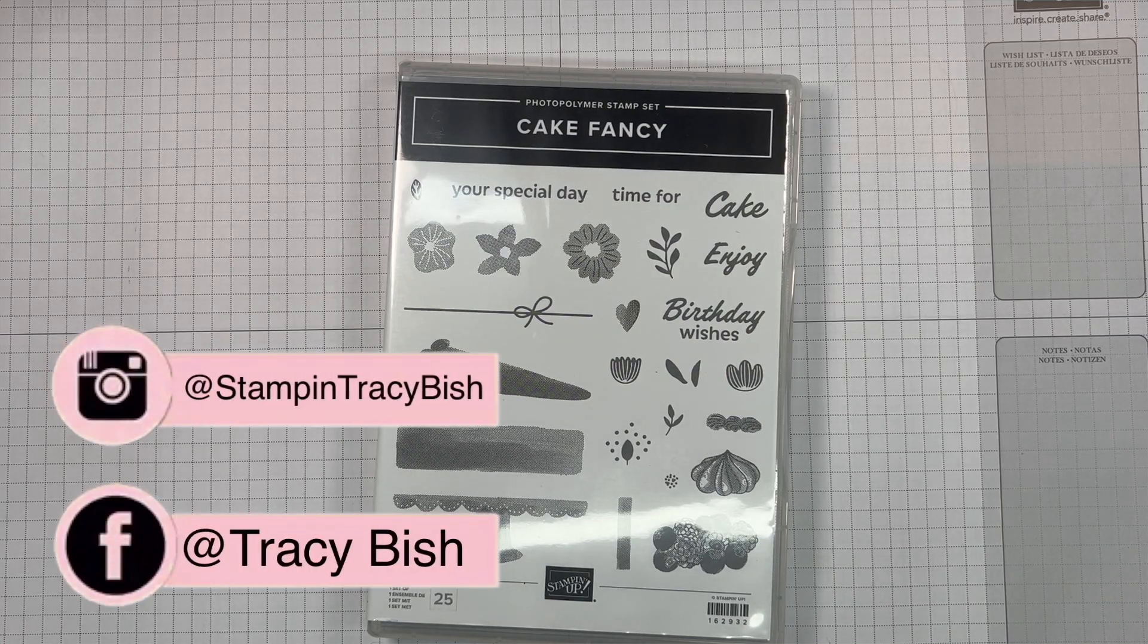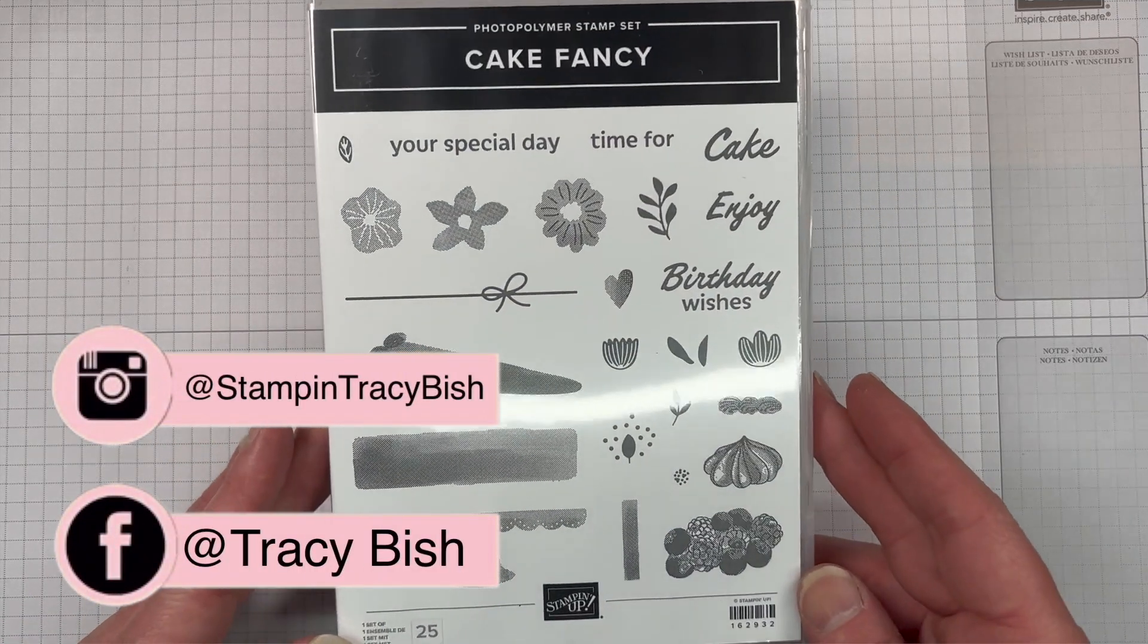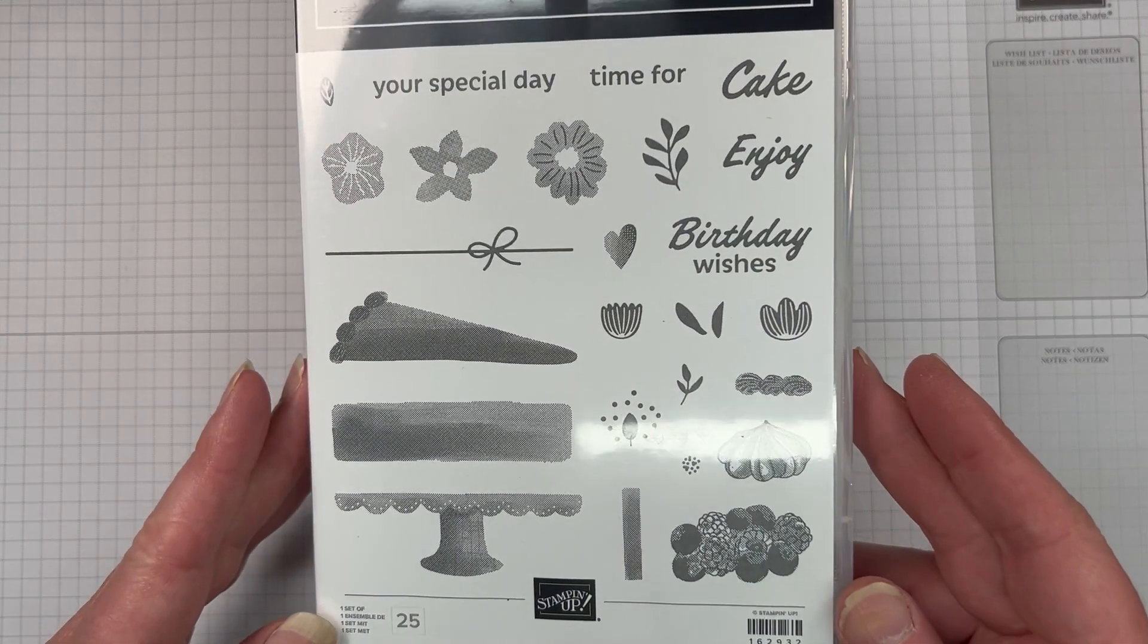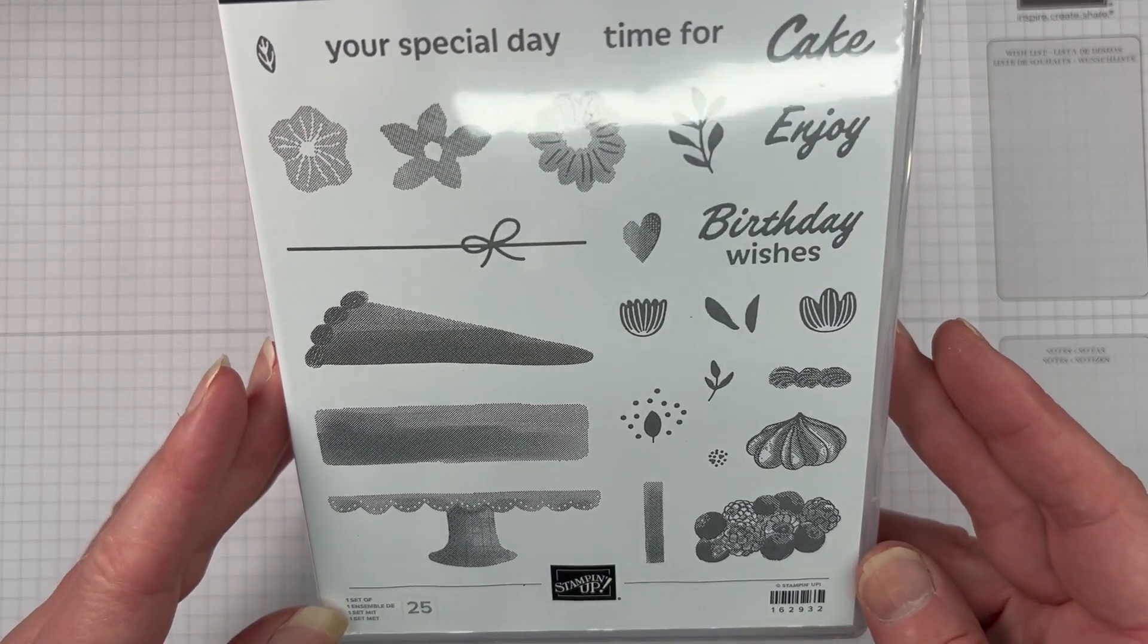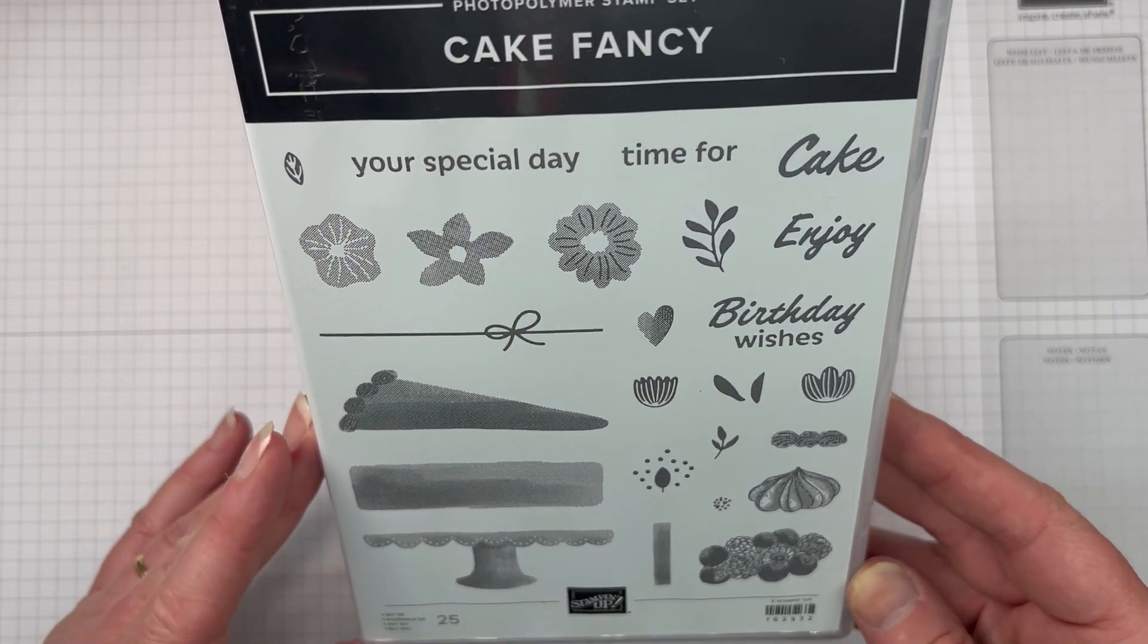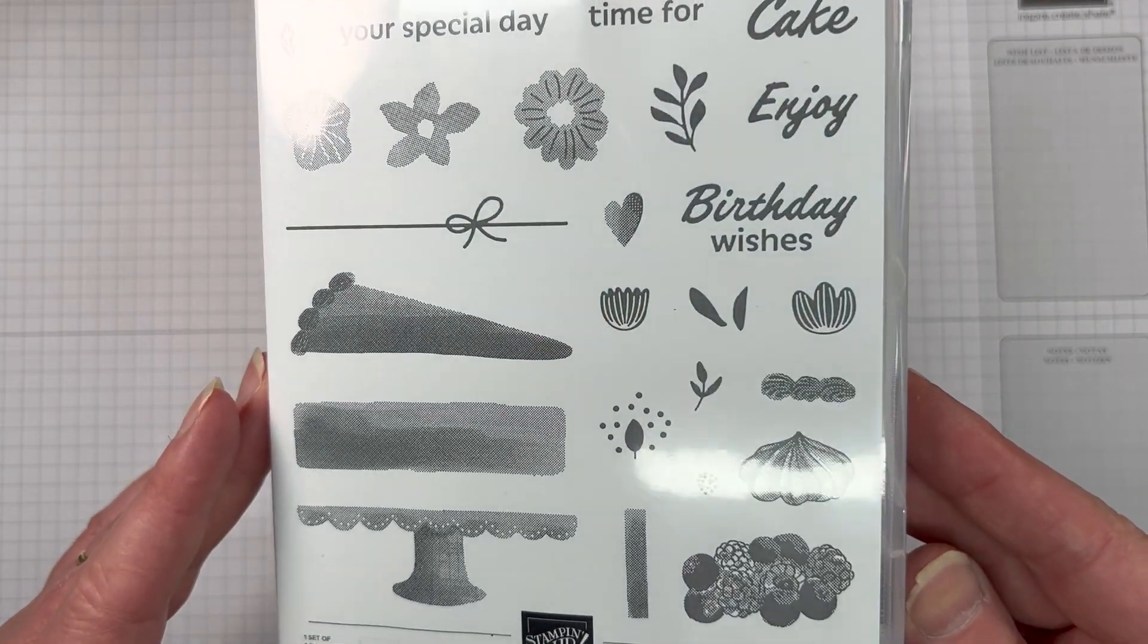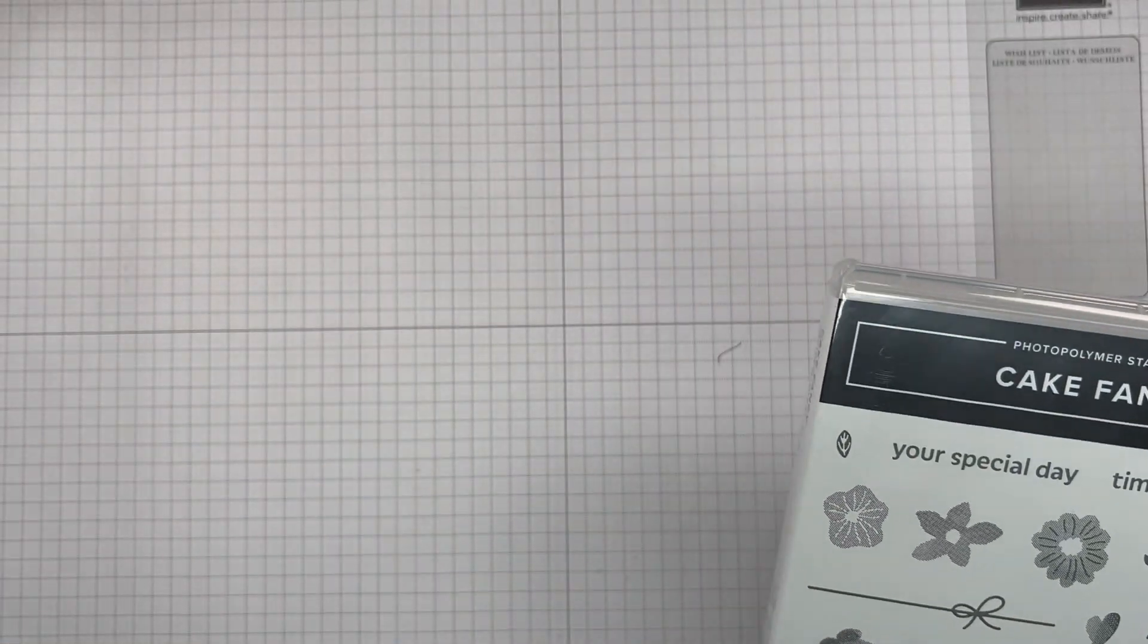Hi friends, Tracey Bish here, Stampin' Up Demonstrator in Australia. Welcome to Tracey's Sunday Challenge, the 3rd of March. I can't believe it's March already. This week's theme is food and I'm using the Cake Fancy stamp set. You can find that in the mini catalogue page 30.